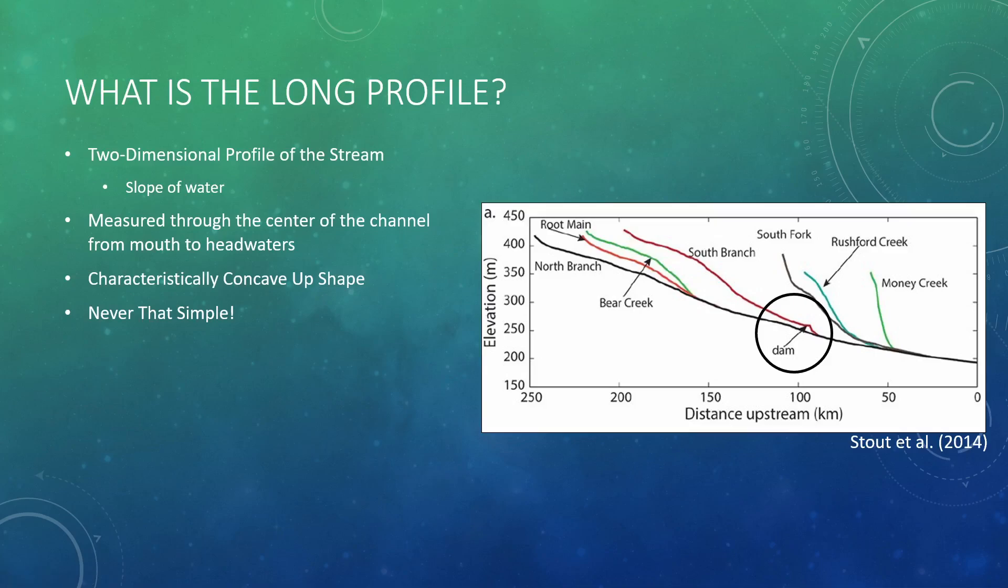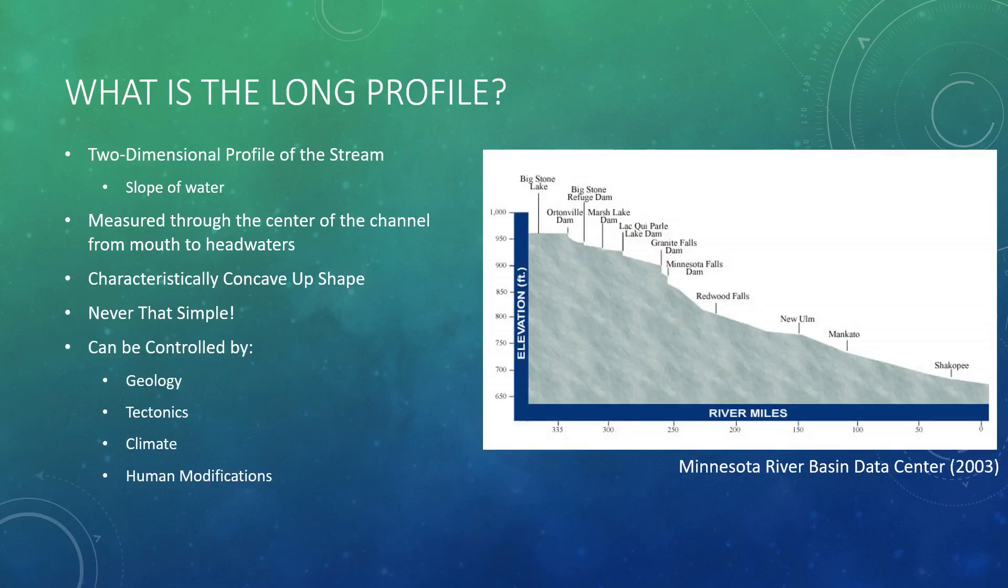Now, if we look a little bit further downstream, here at Money Creek, we can see that it's significantly steeper than the rest of the tributaries in the figure. Now, we don't know necessarily just off looking at the picture what is driving that, but there are many constraints, whether that be geologic, tectonic, climate-based, or human-based, that control the longitudinal profile of the river.